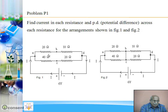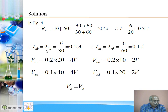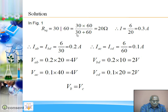So what will be the equivalent resistance of the complete circuit of figure 1? The equivalent resistance will be the parallel combination of 30 and 60, using the formula R1 times R2 divided by R1 plus R2: 30 into 60 divided by 30 plus 60, which gives us 20 ohm. Equivalent resistance of the complete circuit is 20 ohm.